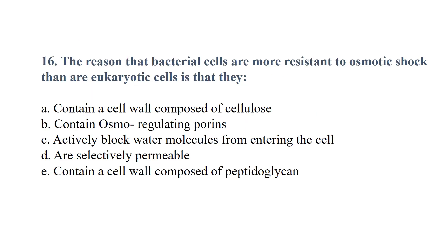The reason that bacterial cells are more resistant to osmotic shock than eukaryotic cells is that they contain a cell wall composed of peptidoglycan.